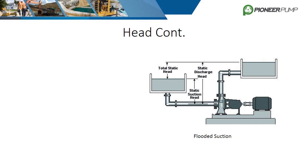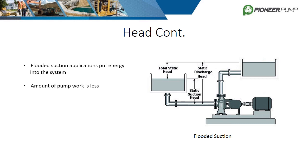Centrifugal pumps are often put into applications where the suction fluid is above the pump center line. This application puts head or energy into the system due to the help of gravity, and is commonly referred to as a flooded suction application. In flooded suction applications, the amount of work the pump must perform is much less due to the total static head distance being smaller than suction lift applications. Friction losses are still a factor, but gravity does most of the work on the suction side. Due to the constant gravity-fed supply of fluid, automatic priming systems are not required in these applications.